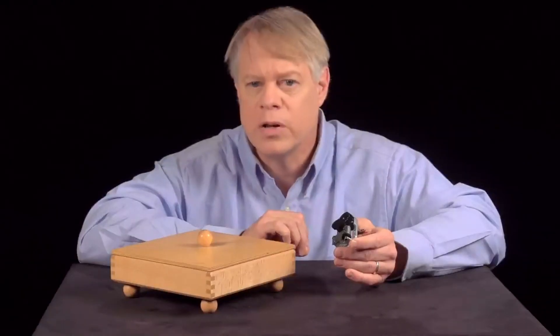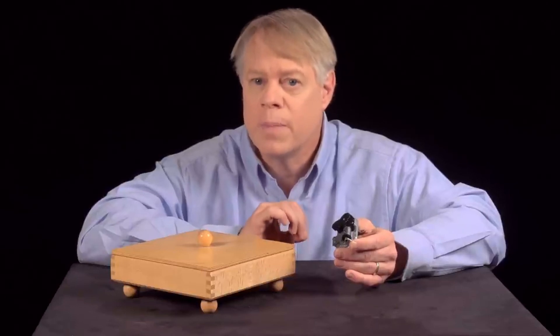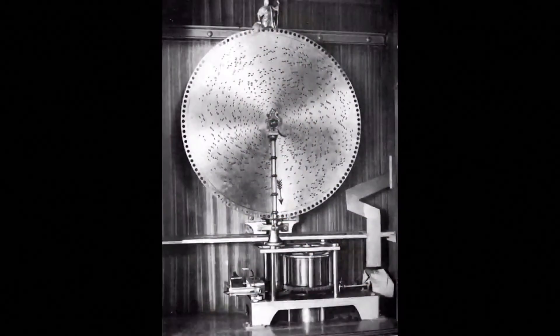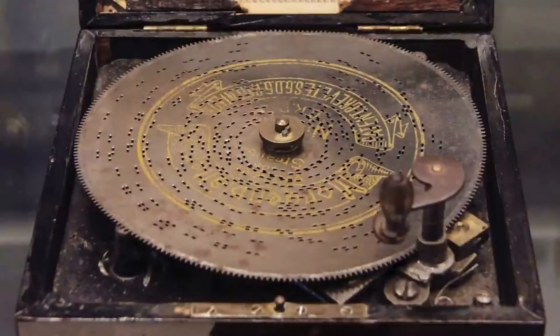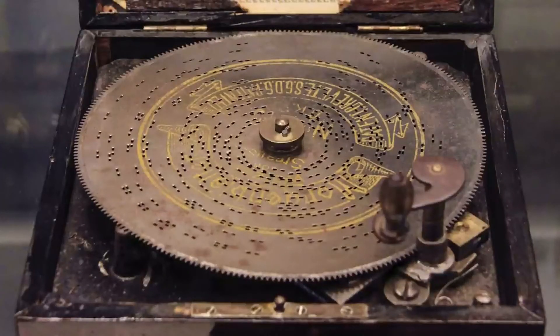The first music boxes used cylinders, but were superseded by boxes that used discs which could be easily changed. Here the melodies were punched into a metal disc. With this innovation, music boxes shrunk and their cost declined.